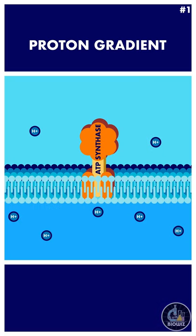This proton gradient must develop between two chambers separated by a membrane having ATP synthase enzyme. The side having higher proton concentration is called the P-side, and the side having lower proton concentration is called the N-side.